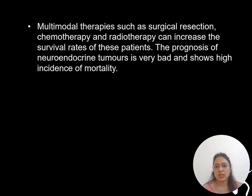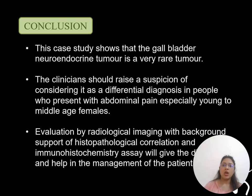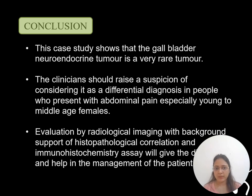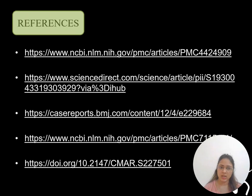Multimodal therapy such as surgical resection, chemotherapy, and radiotherapy can increase the survival rate; however, the prognosis is not good for neuroendocrine tumors. To summarize, this case study shows that gallbladder neuroendocrine tumor is a very rare tumor. Clinicians should raise suspicion and consider it as a differential diagnosis for young patients presenting with abdominal pain, especially middle-aged females, and should correlate radiological findings with histopathology and immunohistochemistry studies. Thank you.